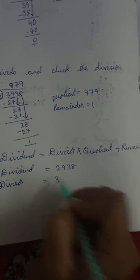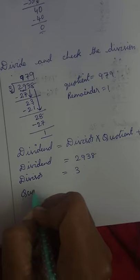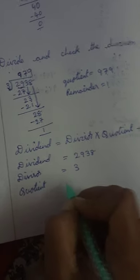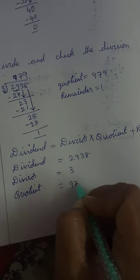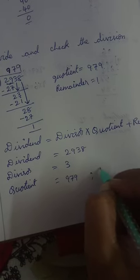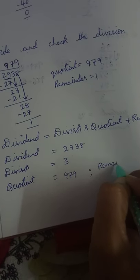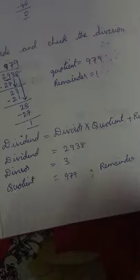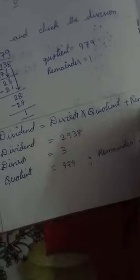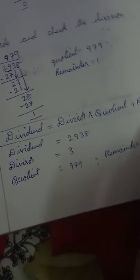What is the divisor? The divisor is 3. What is the quotient? The quotient is 979. And what is the remainder? The remainder is 1.